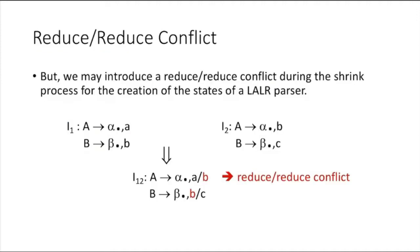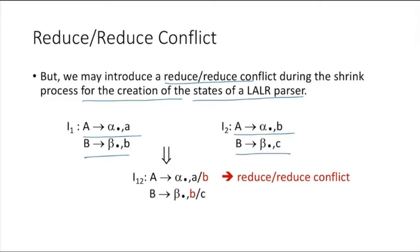For reduce-reduce conflict: we may introduce a reduce-reduce conflict during the shrink process of creating states of an LALR parser. Consider: A → α• with lookahead 'a', and B → β• with lookahead 'b'. Another set of items has A → α• with lookahead 'b', and B → β• with lookahead 'c'. The lookaheads overlap, so when you merge these states — whose core items are the same — you get A → α• with lookaheads {a,b} and B → β• with lookaheads {b,c}.